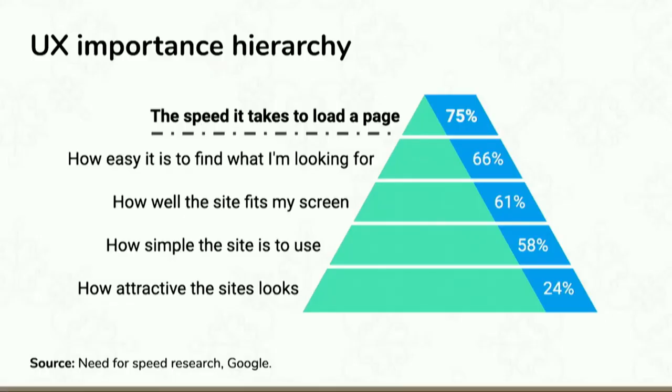This is the UX hierarchy. The most important thing for users is how long it takes for a page to load. Thereafter: how easy it is to find something, how well a site fits on my screen, and how simple it is to use. All of those things are about perception — it's not just about the technical speed, it's about the perception. How attractive a site looks is at the bottom, which is depressing because I studied graphic design 20 years ago. But if you ask users the most important thing on the mobile web, they say speed.